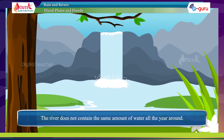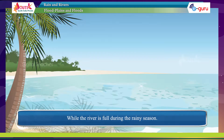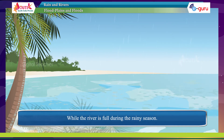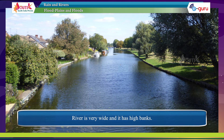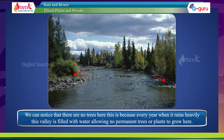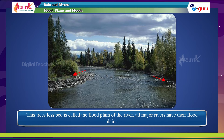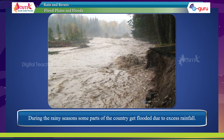Flood plains and floods: the river does not contain the same amount of water all year around. While the river is full during the rainy season, it usually shrinks during the dry season. The river valley is wide with high banks, filled with sand and gravel, with no trees. This is because every year when it rains heavily, this valley is filled with water, allowing no permanent trees or plants to grow. This treeless bed is called the flood plain of the river.